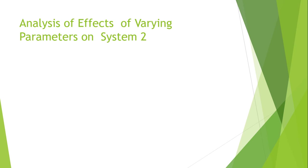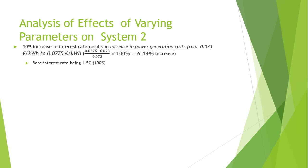Summarizing the sensitivity analysis of the effects of varying the parameters on system number two: a 10% increase in interest rate will result in a 6.14% increase in the power generation cost.